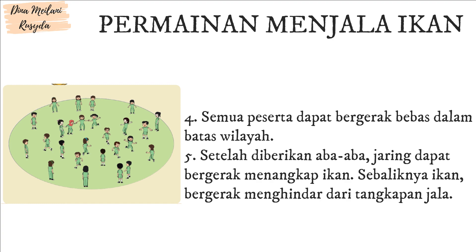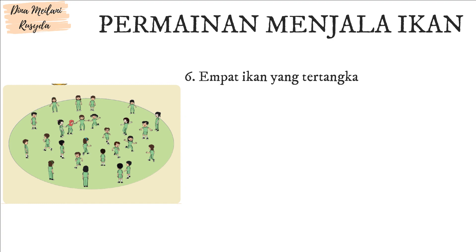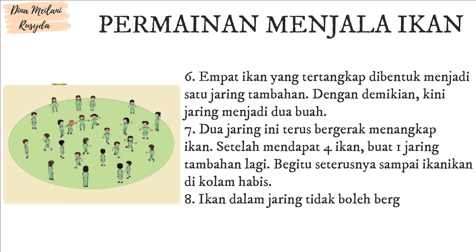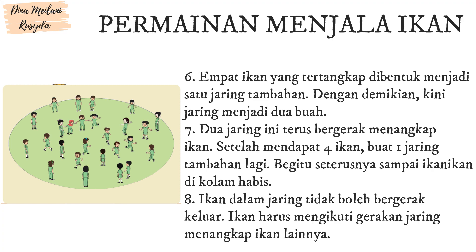Langkah 5: Setelah diberi aba-aba, jaring atau jala dapat bergerak menangkap ikan. Sebaliknya, ikan bergerak menghindar dari tangkapan jala. Langkah 6: Empat ikan yang tertangkap dibentuk menjadi satu jala tambahan. Dengan demikian, kini jaring atau jala menjadi dua buah.